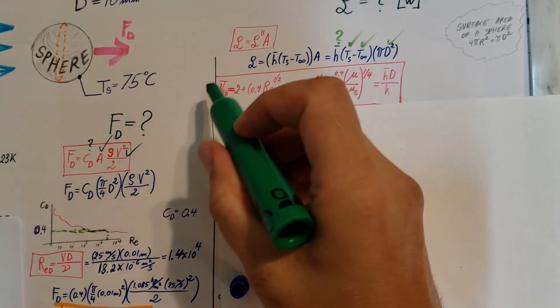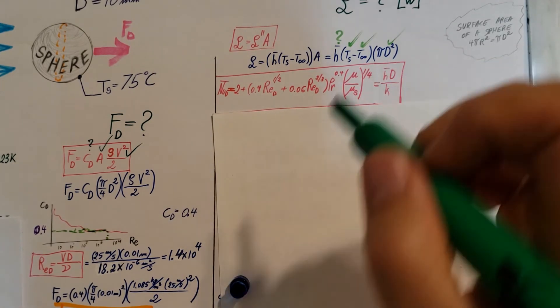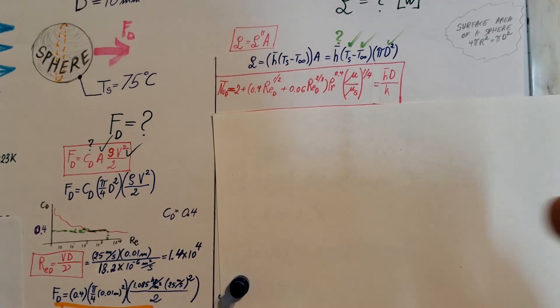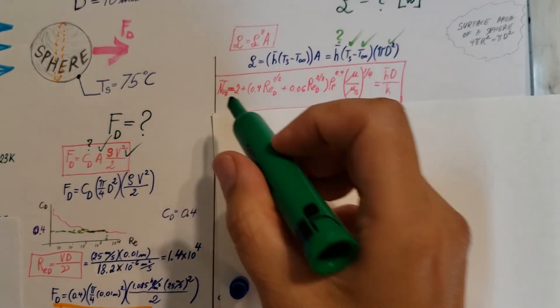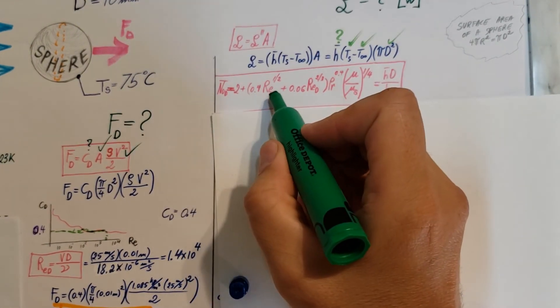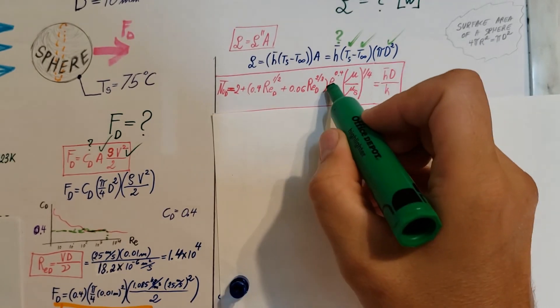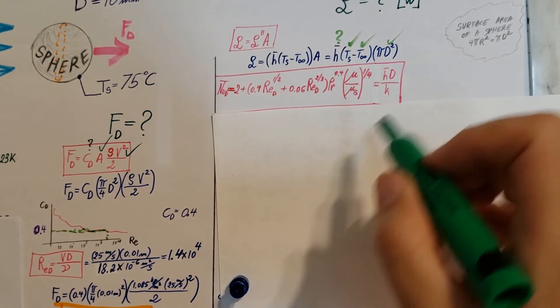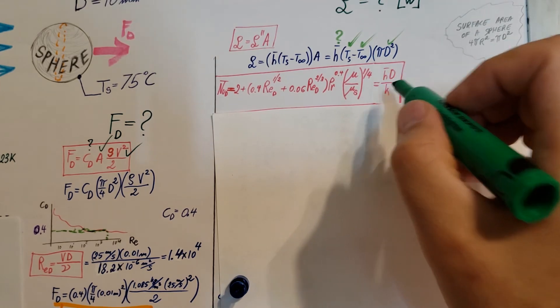So we're going to use Whitaker's formula, solve for h, and we're going to be able to find it. But first there's a lot of stuff in this formula we need to find: the Reynolds number, Prandtl number, dynamic viscosity, two different ones, diameter, and the thermal conduction coefficient.